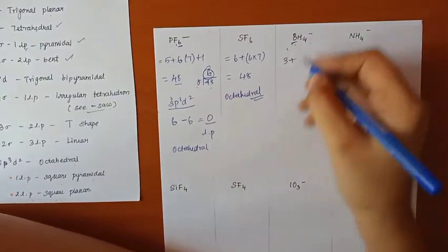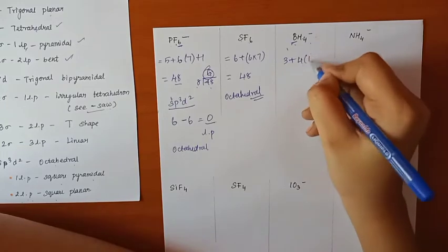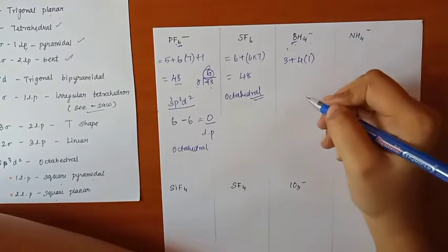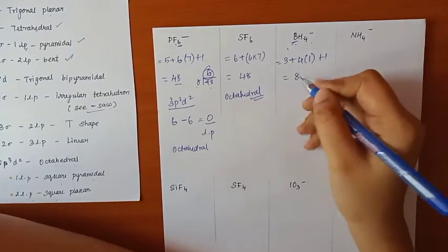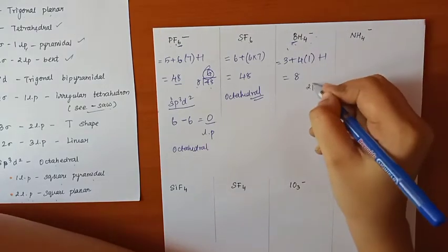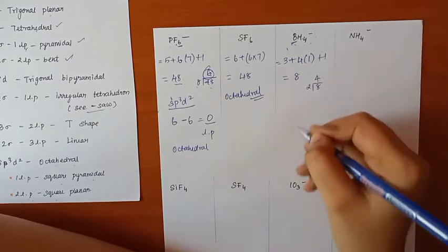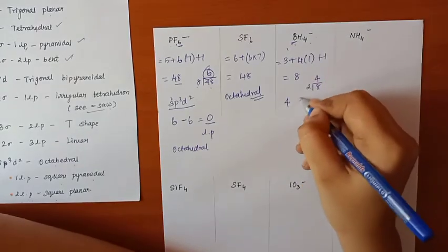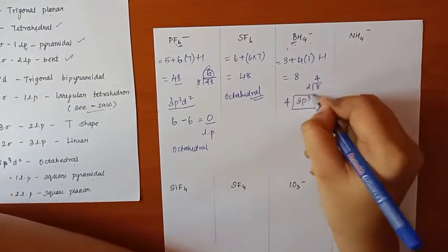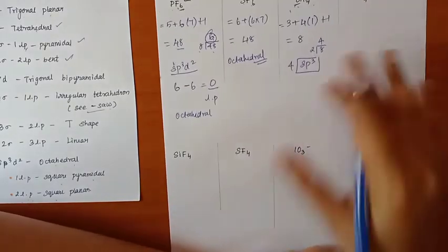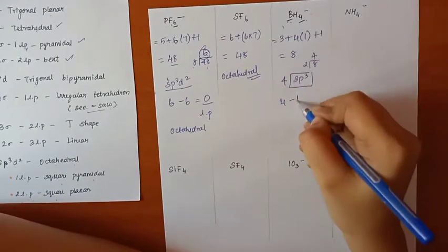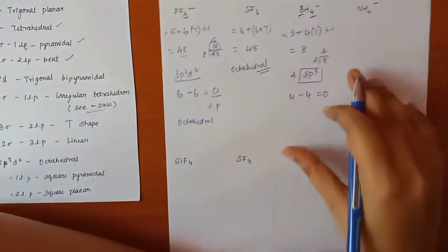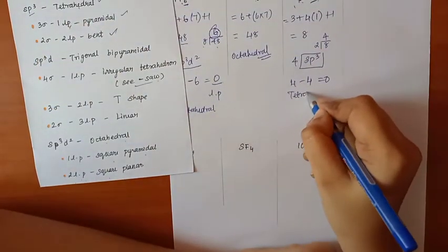Next example: BH4 minus — hydrogen is 1, 4 times hydrogen = 4, plus 1 for the negative charge = 8 total. Since the value is 8, divide by 2 to get 4, which means SP3 hybridization. Lone pairs = 4 minus 4 surrounding atoms = 0. SP3 with 0 lone pairs is tetrahedral structure.